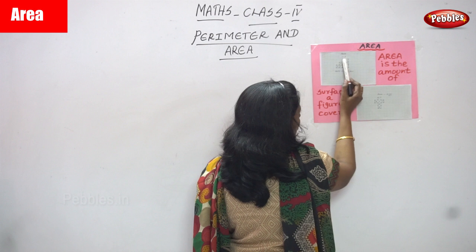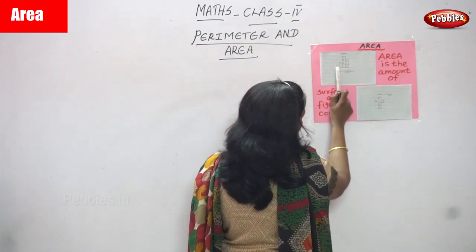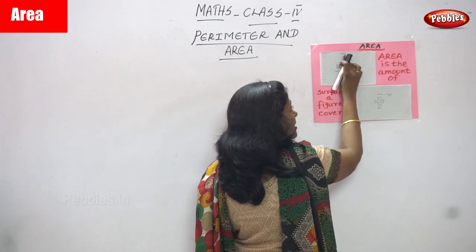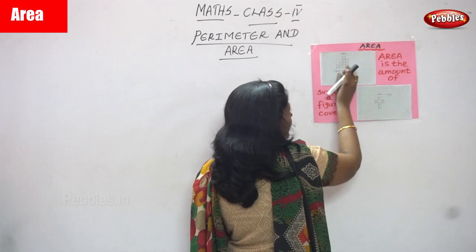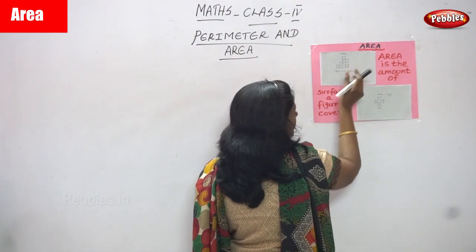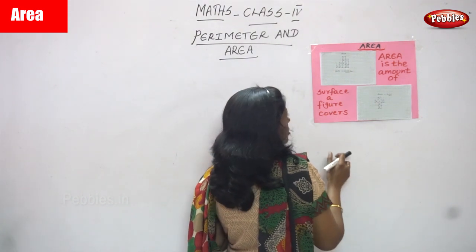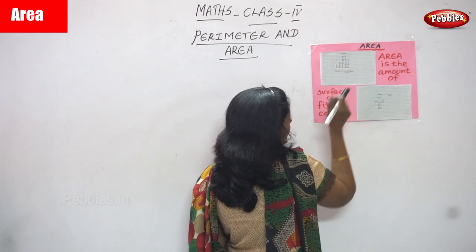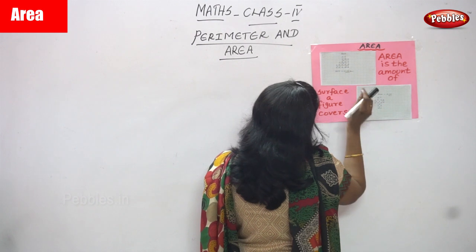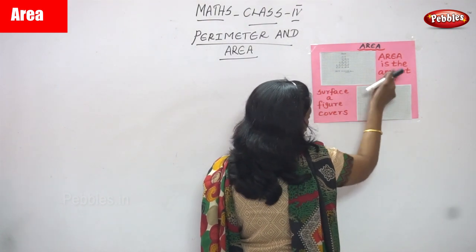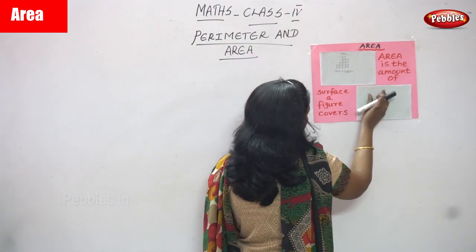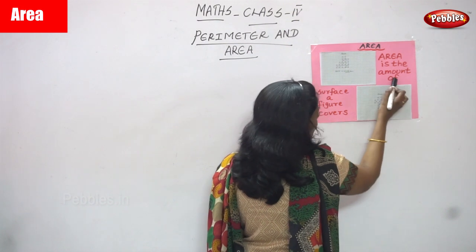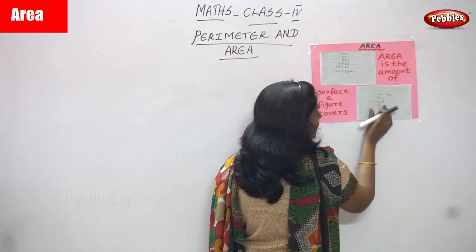Each square is one unit — first square, second square, third square, up to the tenth square. The inside surface covered by the figure is called area. So how much amount of inside surface this figure covers is what we call area.